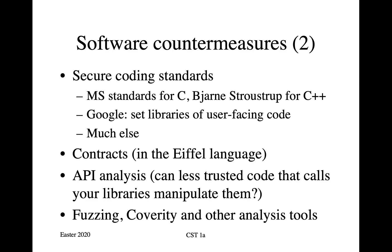There's much else. Some languages have contracts — mechanisms whereby different modules in the code agree what sort of data can be passed backwards and forwards. And there's the more general problem of API analysis: how do you analyze an application programming interface and find out whether less trusted code that calls more trusted code — say in your libraries — could manipulate them? You always have to assume when writing a library that it may be called by code that's under the control of the enemy.